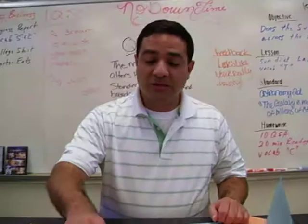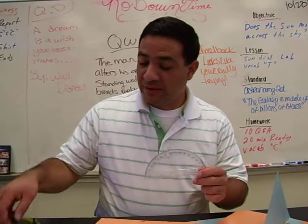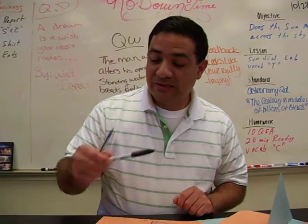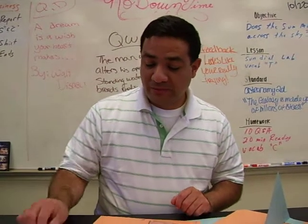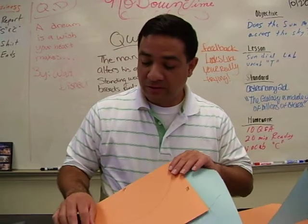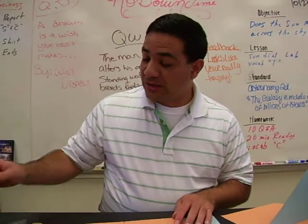Some of the supplies you will need are a protractor, a compass, ruler, vis-a-vis marker, pen, pencil, construction paper, thick construction paper, cardstock, and a flashlight for the extension.